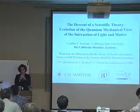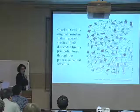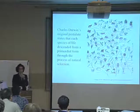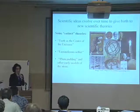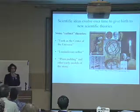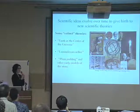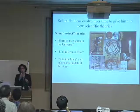We all know that Charles Darwin's original postulate states that each species of life descended from a primordial form through the process he called natural selection. In science, we can also think of ideas evolving over time to give birth to new scientific theories. What you see here is a list of some theories that became extinct. The Earth at the center of the universe is one theory that became extinct — that extinction was as radical as the extinction of the dinosaurs, and a whole set of philosophical and religious ideas collapsed with it.